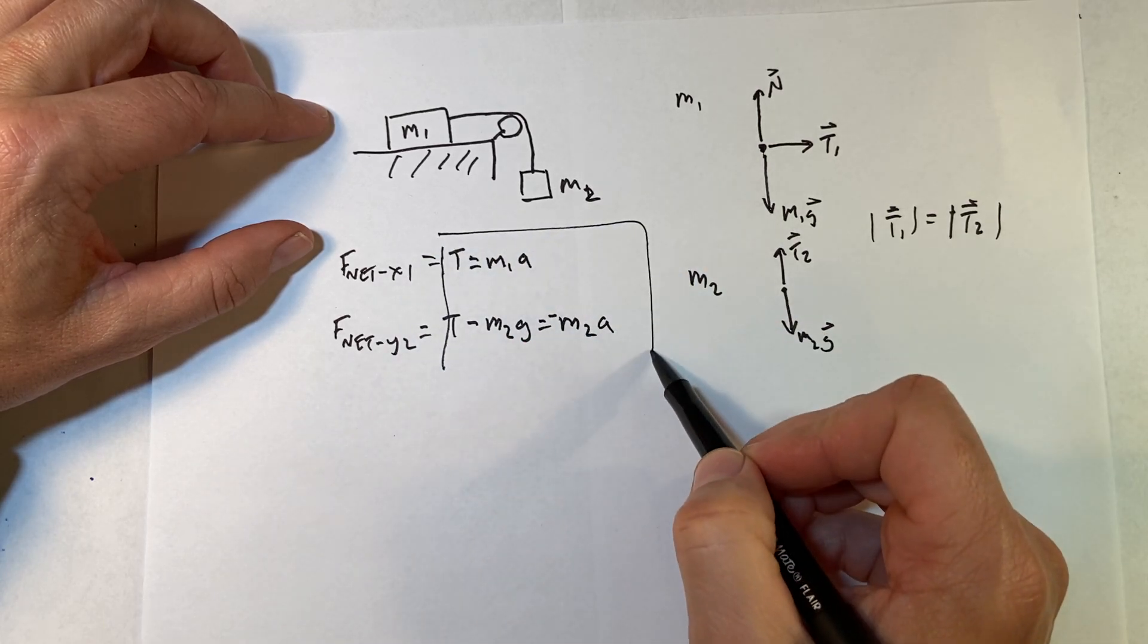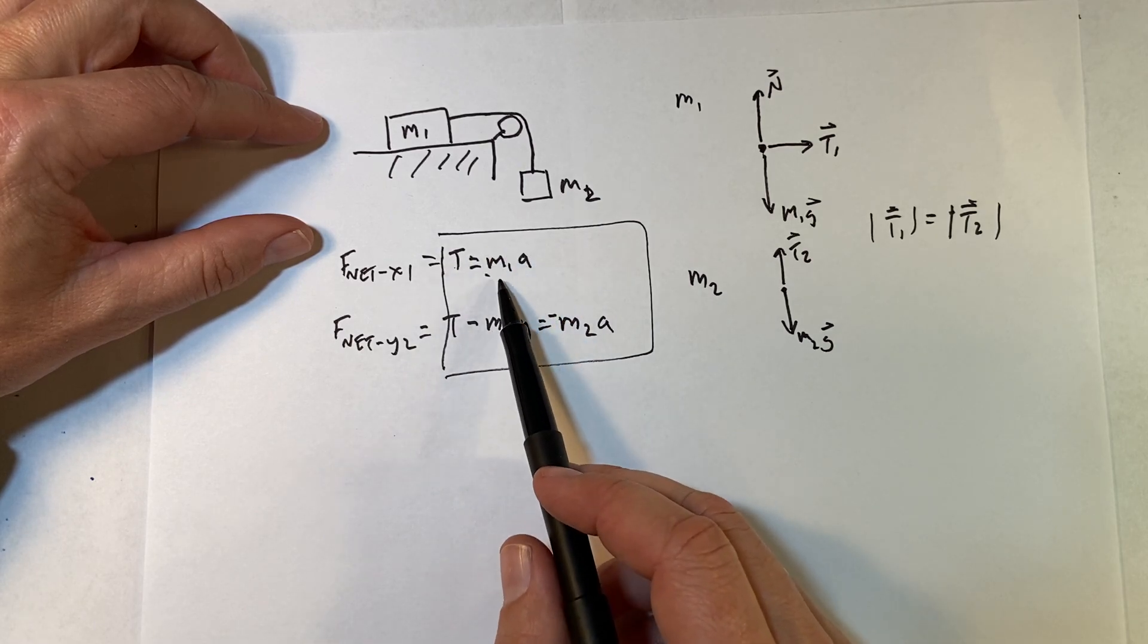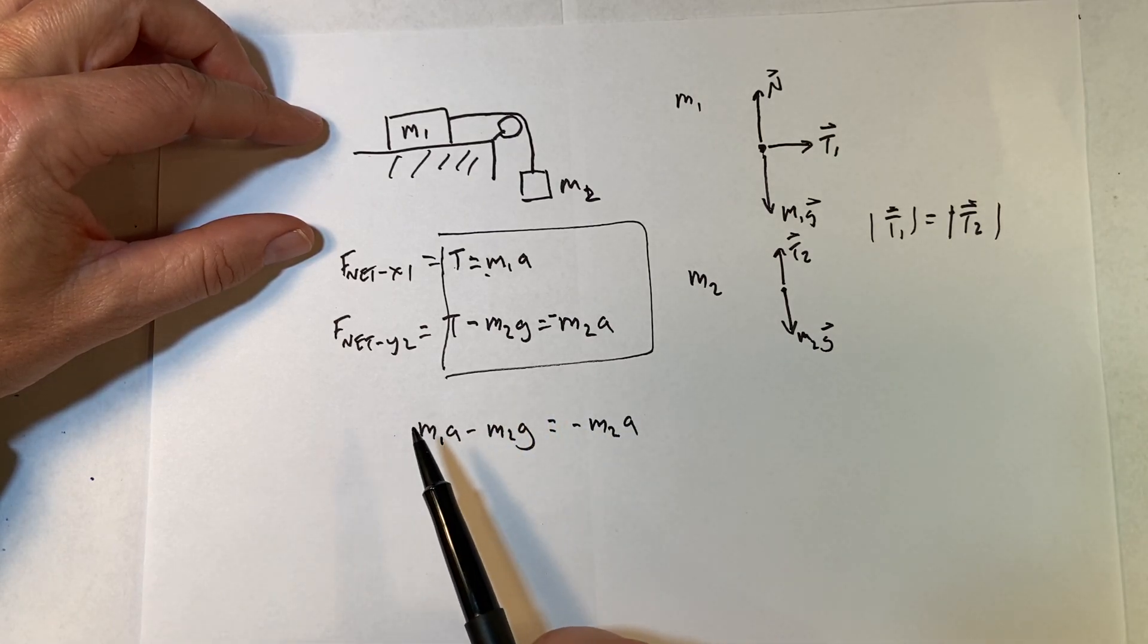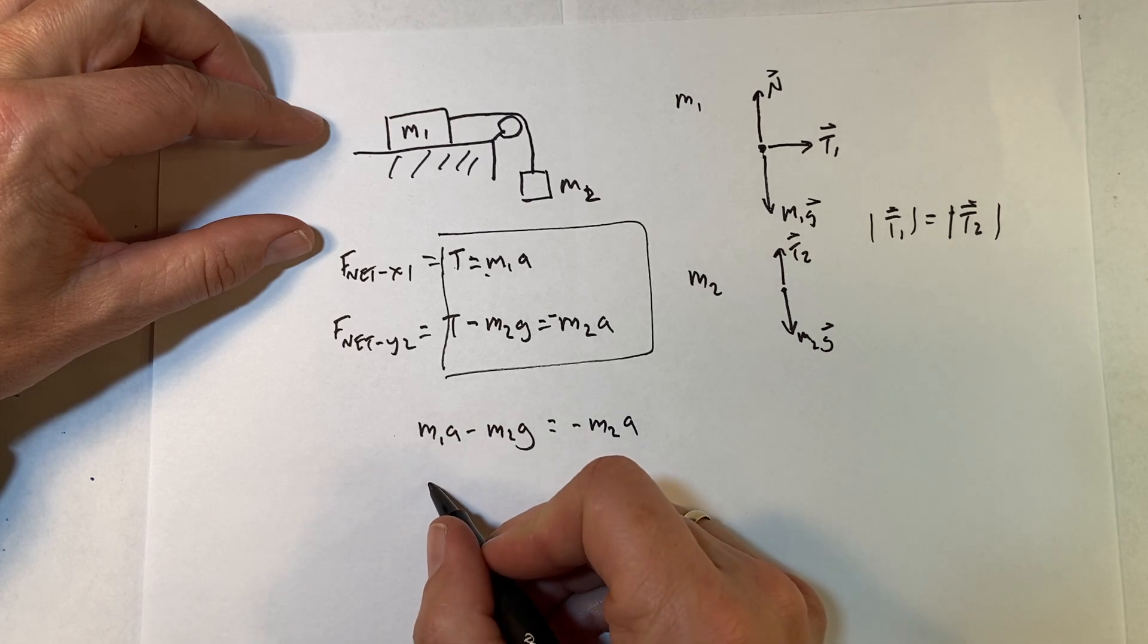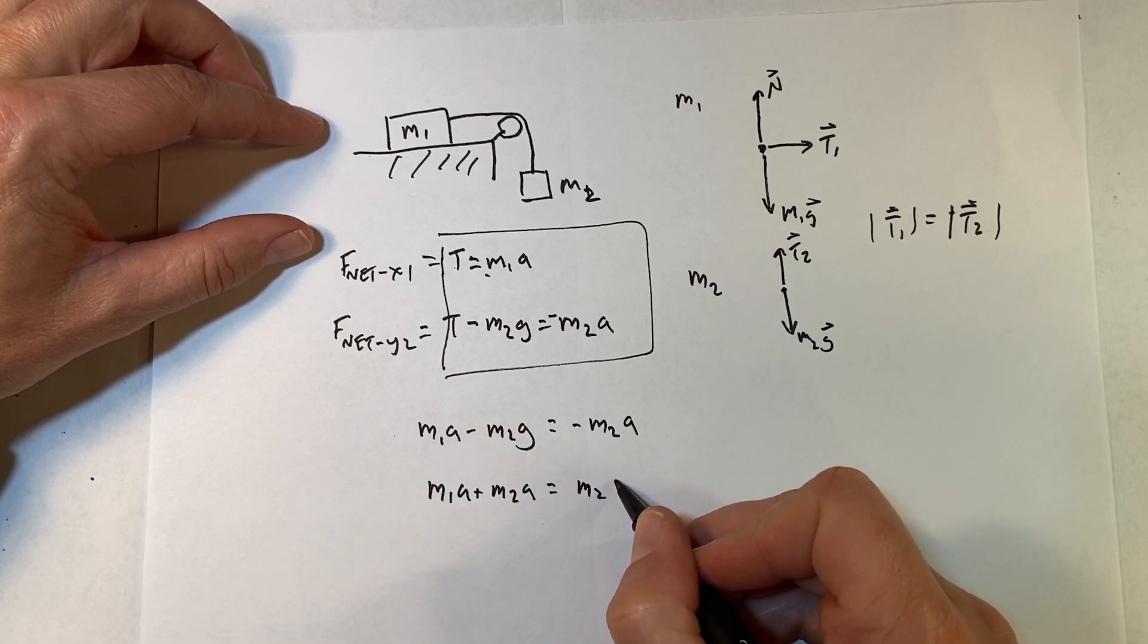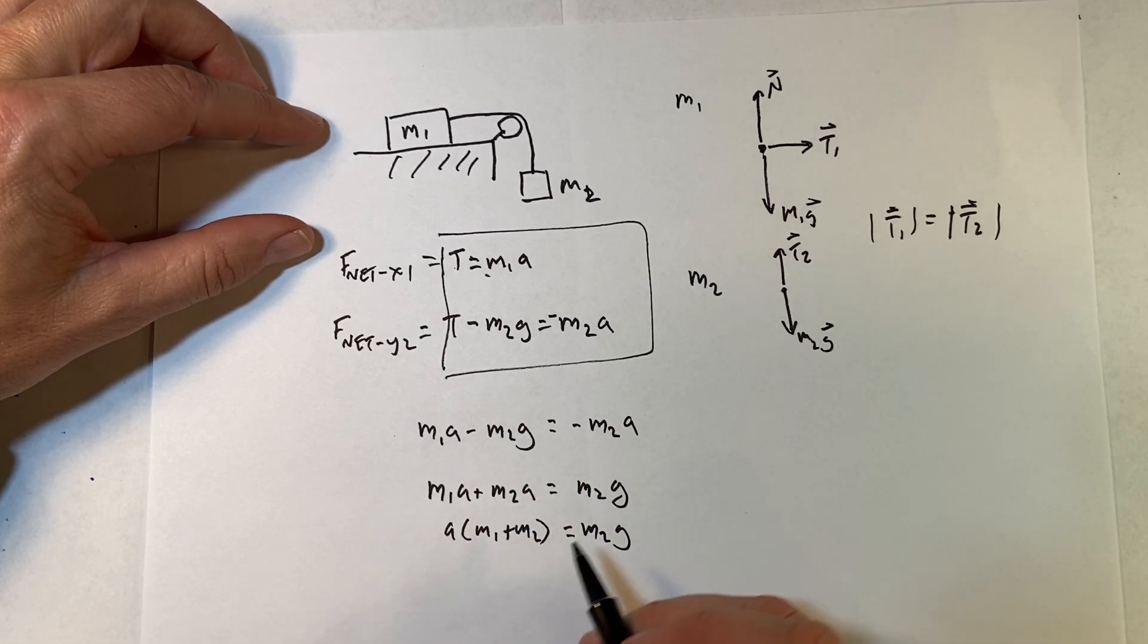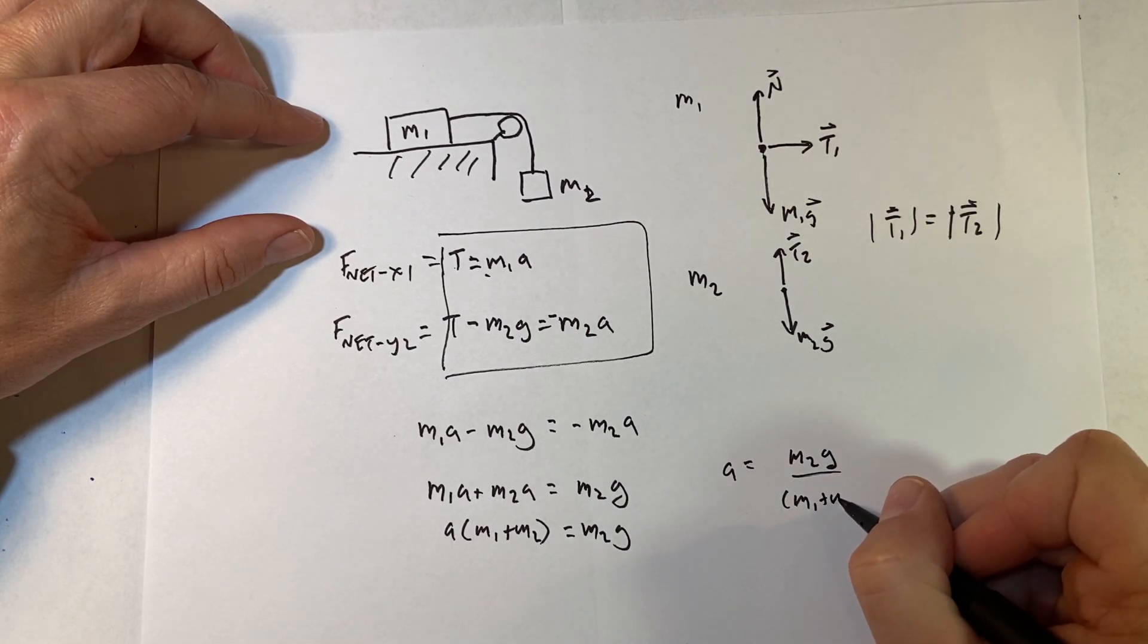So again, I have two equations, two unknowns. This one's pretty easy to solve. So I have t, I'm going to substitute this in down here. So I get m1a minus m2g equals negative m2a. So I want to get the m's on the same side, so let's add m2a to both sides. So I get m1a plus m2a equals m2g. Now I'm going to factor out the a. Now I'm going to divide both sides by m1 plus m2, and I get a equals m2g over m1 plus m2.